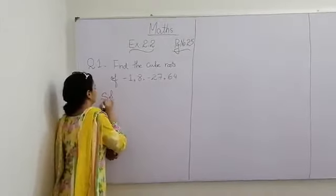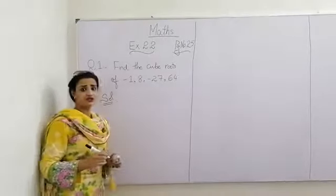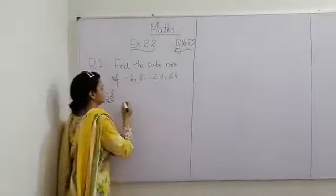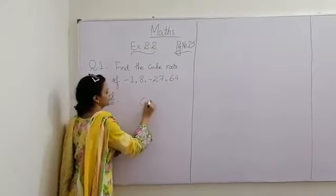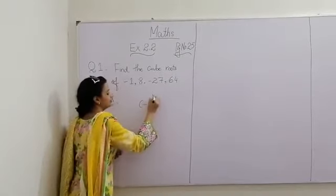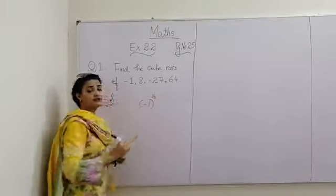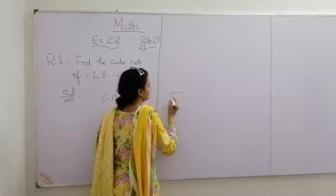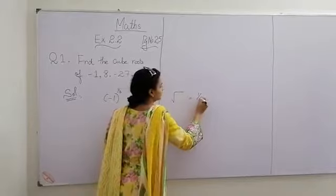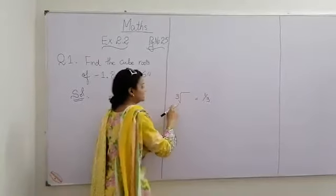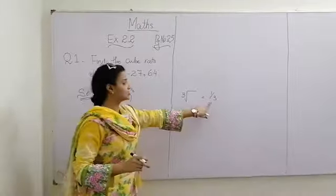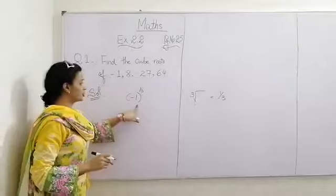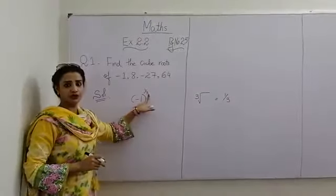First of all, what is the step? How can we solve this question? We just take minus 1 by taking the cube root. The value of cube root is 1 over 3. It is a radical form and it is an exponential form. So in this question we solve by the exponential form 1 over 3.